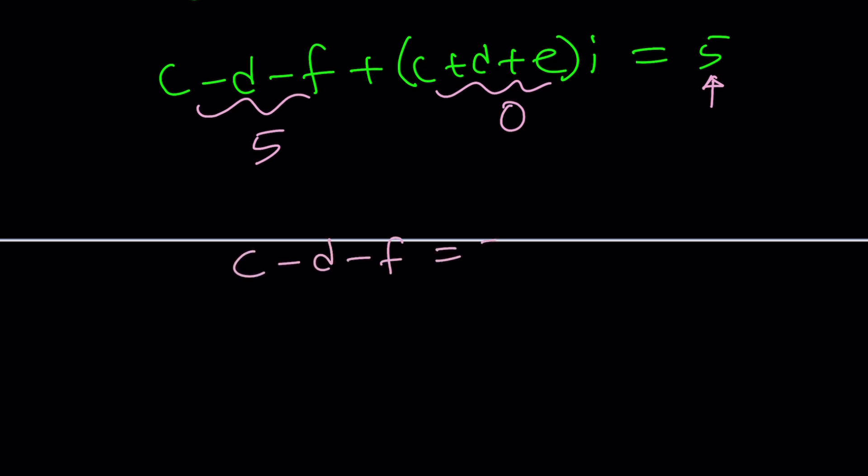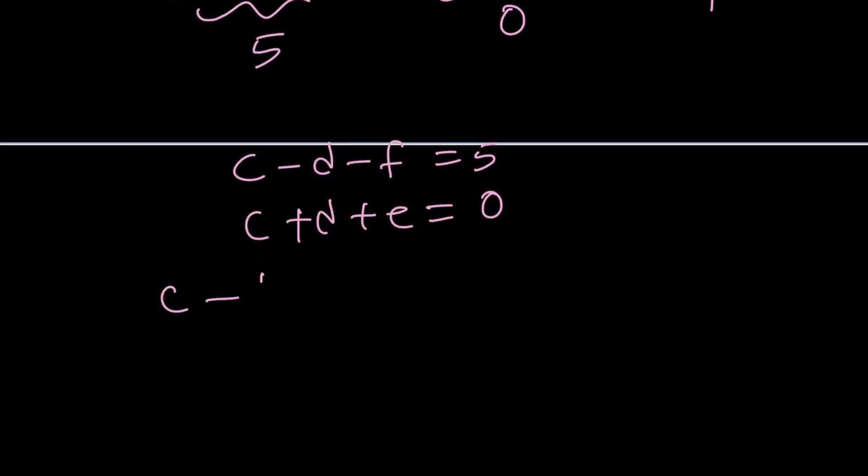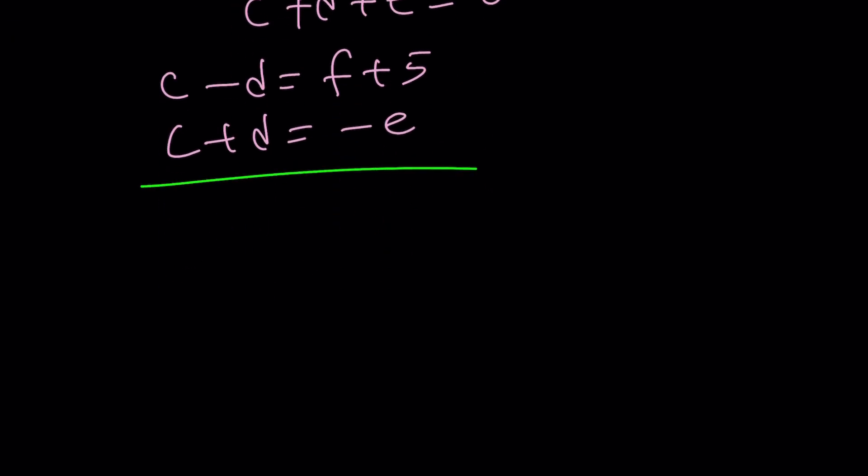c minus d minus f equals 5, and c plus d plus e equals 0. There's a couple ways to go about it, but I would probably just isolate c minus d and c plus d, so we can kind of solve for c and d only, write them in terms of e and f. For example, if you add these two equations, 2c or not 2c, do you see what I'm talking about? f minus e plus 5, and then from here, c will be f minus e plus 5 divided by 2.